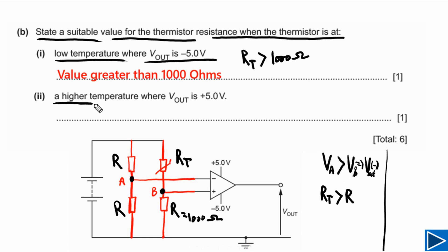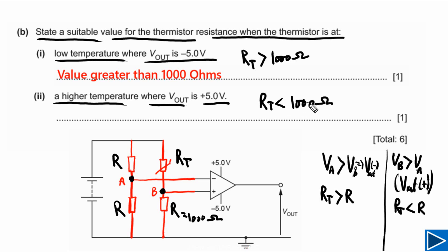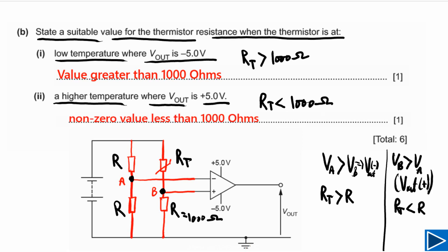For the second part, at higher temperature when Vout is positive, we need to suggest a suitable thermistor value. Vout will be positive when VB is greater than VA. This is possible when the resistance of the thermistor is less than the resistance of the fixed resistor R. So when RT is less than 1000 ohms, Vout will be positive. The thermistor resistance must be less than 1000 ohms.